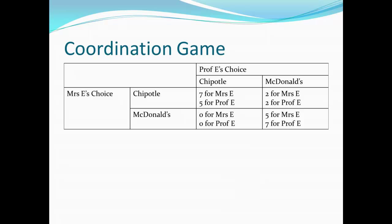Looking at all the possible outcomes: if I go to Chipotle while my wife goes to McDonald's, it's a terrible outcome — each of us gets zero, because we're eating alone and eating food we don't like. If we both go to Chipotle, we each get five points from eating together, plus my wife gets two points from eating Chipotle food, so she gets seven and I get five. From my wife's perspective, if she guesses I'm going to Chipotle, her best response is to also go to Chipotle — seven is far better than zero. If she thought I was going to McDonald's, her best response would be to come to McDonald's, because five points from eating together beats two points from eating Chipotle alone.